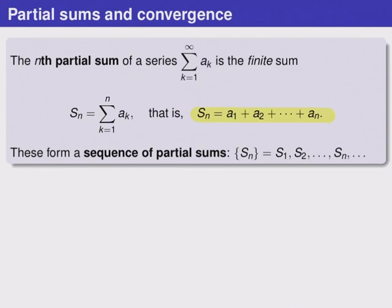When we list these, s_1 being the first term, s_2 being the sum of the first two terms, s_3 being the sum of the first three terms, and so on, these form a sequence in their own right, called a sequence of partial sums. We usually call this S_n with a capital S.